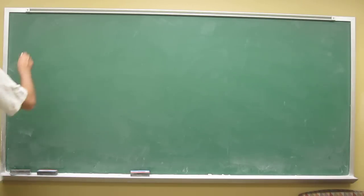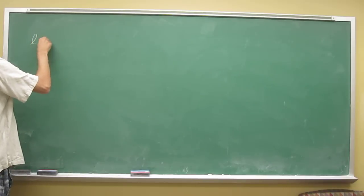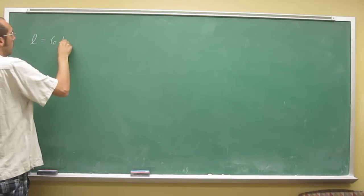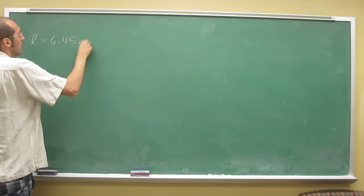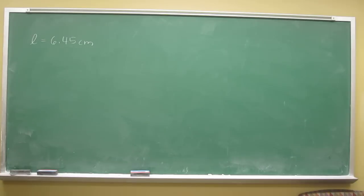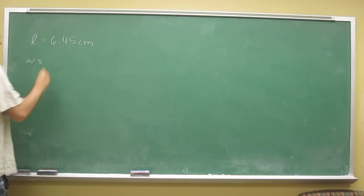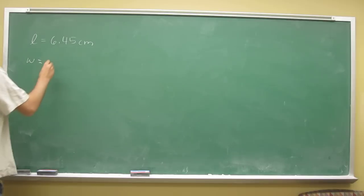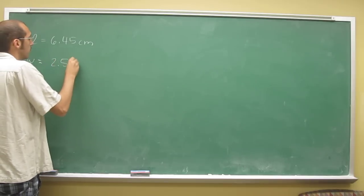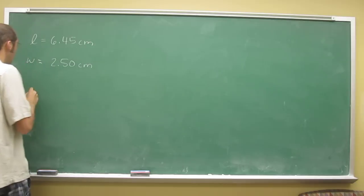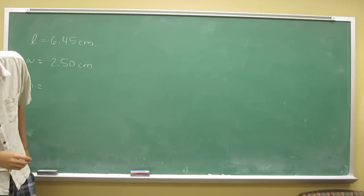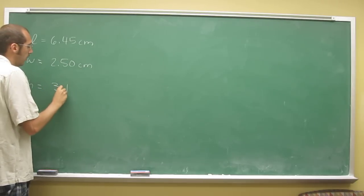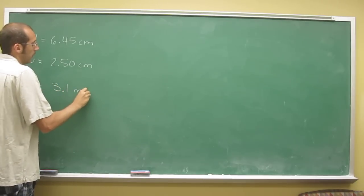The length of the piece of metal is 6.45 centimeters. The width of the piece of metal is 2.50 centimeters, and the thickness or the height is 3.1 millimeters.